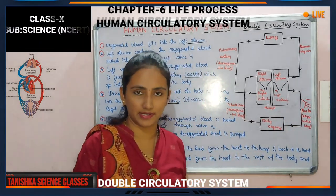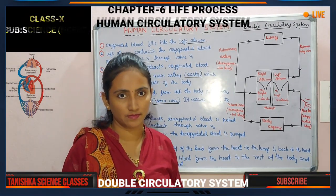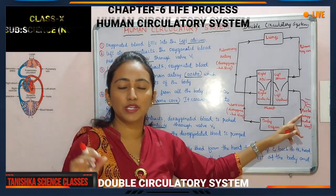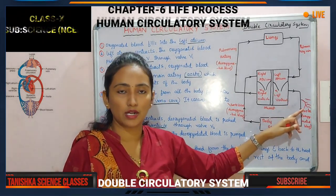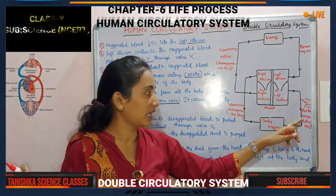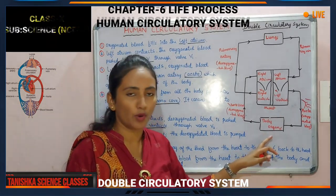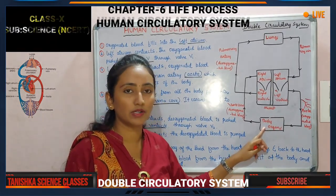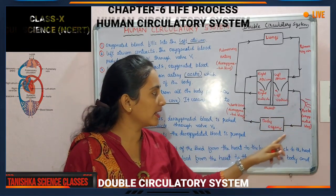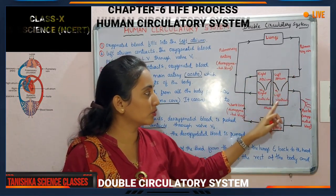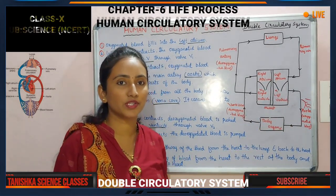The aorta branches into smaller arteries, and those branched arteries contain small capillaries. Those capillaries are attached to each and every cell of our body. Through the aorta, through the small arteries, and through the capillaries, blood is transferred to each and every cell of our body — blood is now reaching all our body organs.